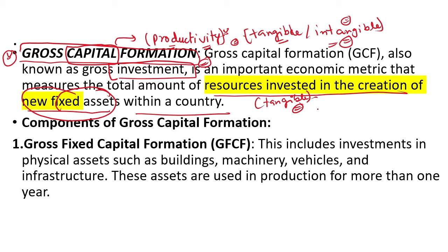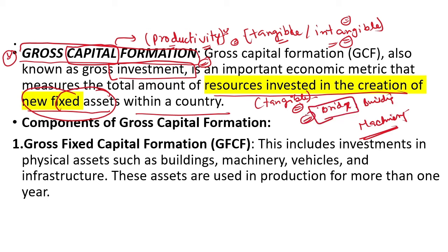For example, how many bridges or buildings have been made, or how many machineries a company has — these are all fixed assets of that company, country, or government. They will give productivity tomorrow. Like if you make a bridge, traffic becomes smooth. Everyone going to the office saves time; their productivity increases. A new asset created in the state will also collect toll tax, which is money for the government.